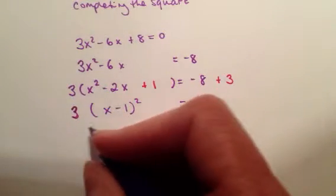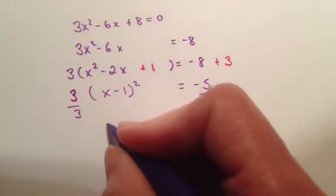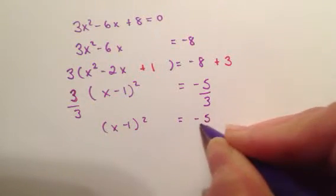Now, I'm going to move that 3 over so I can divide both sides by 3. And I have x minus 1 on this side. And on this side, I have negative 5 thirds.